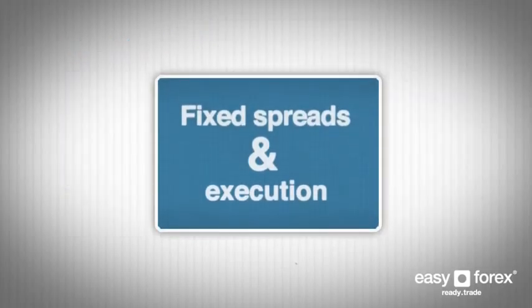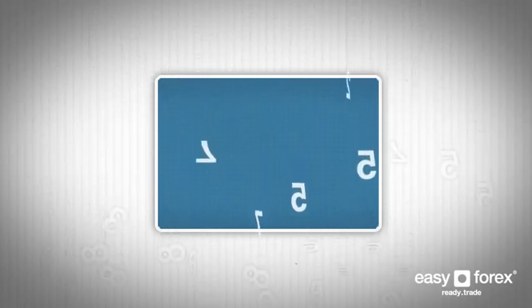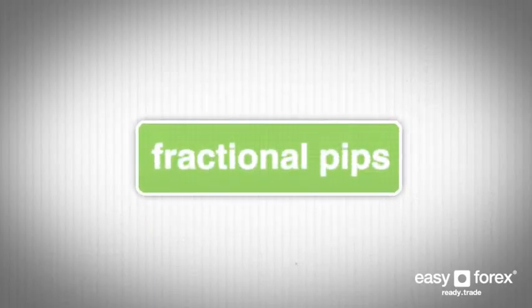It is our commitment to provide our traders with access to the best fixed spreads and execution methods, and this is why you may at times notice additional smaller numbers at the end of a currency rate. These numbers are referred to as fractional PIPs and are a new pricing feature which lets you see more price action detail and helps you make more informed trading decisions.